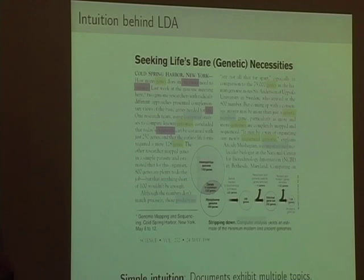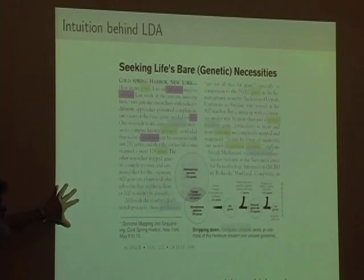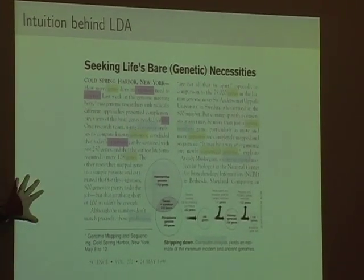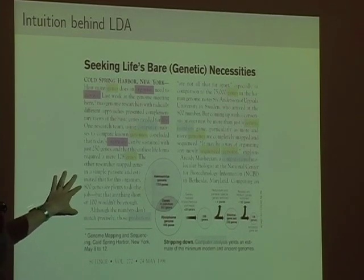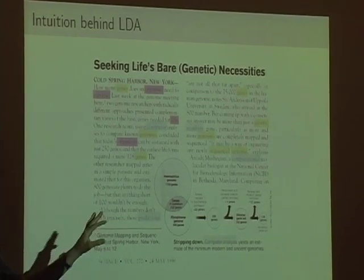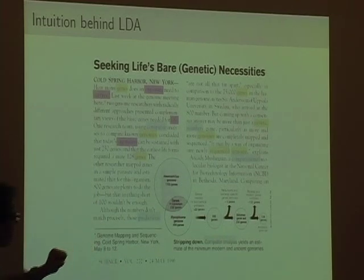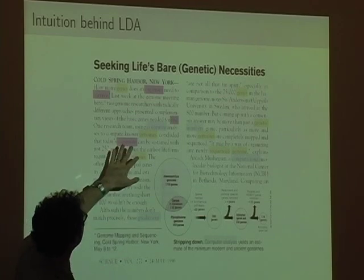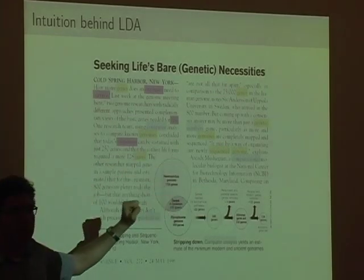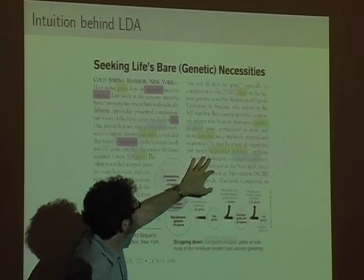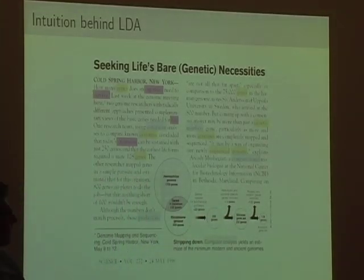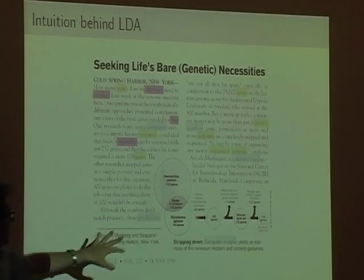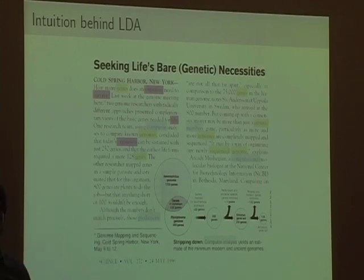The intuition behind Latent Dirichlet Allocation — LDA — is that documents exhibit multiple topics. Here's an example document called 'Seeking Life's Bare Genetic Necessities,' an article about how many genes an organism needs to survive. I've highlighted different words by hand: words like organisms, survive, life — evolutionary biology words in pink; words like genes, genomes, sequenced — genetics words in yellow; and words like predictions, computer analysis, computation — data analysis words in blue. The article combines words about evolutionary biology, genetics, and statistical analysis.